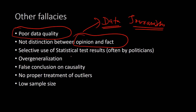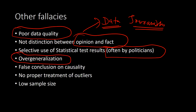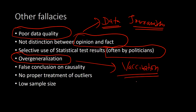Selective use of statistical test results is common among politicians, who selectively use data to justify their actions. Over-generalization is another big problem — taking a small sample, doing some analysis, and presenting conclusions to the public as universally valid. For example, with COVID vaccines, you cannot generalize that a vaccine works unless it has been tested on a sufficient number of people across many countries, which is why there are multiple stages of clinical trials.